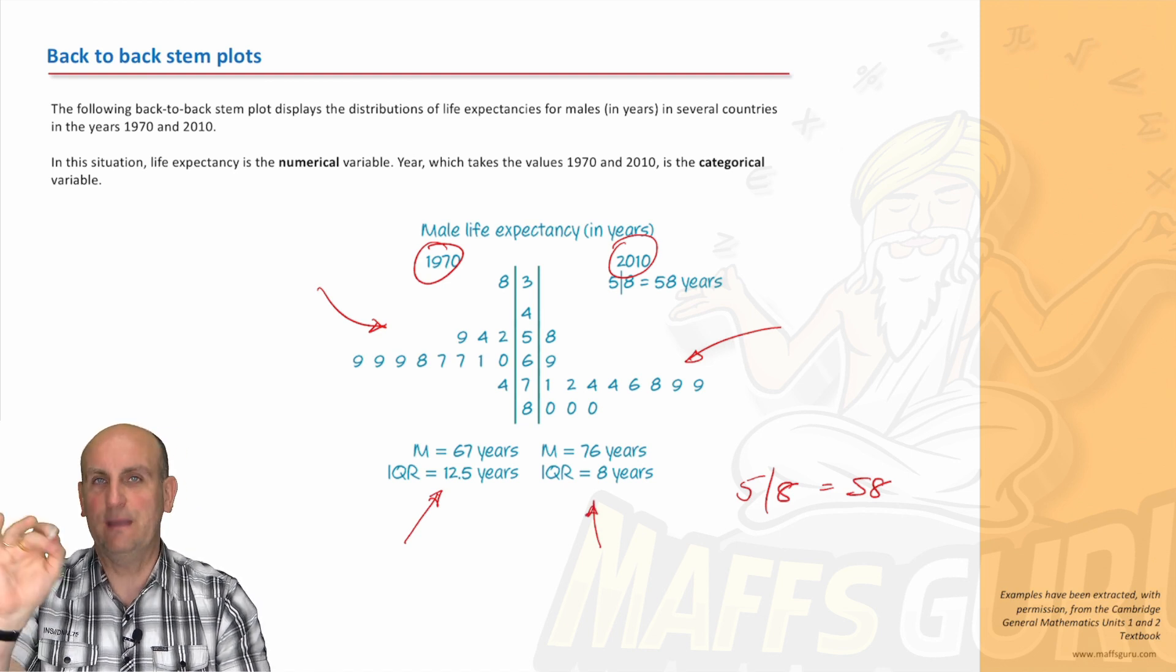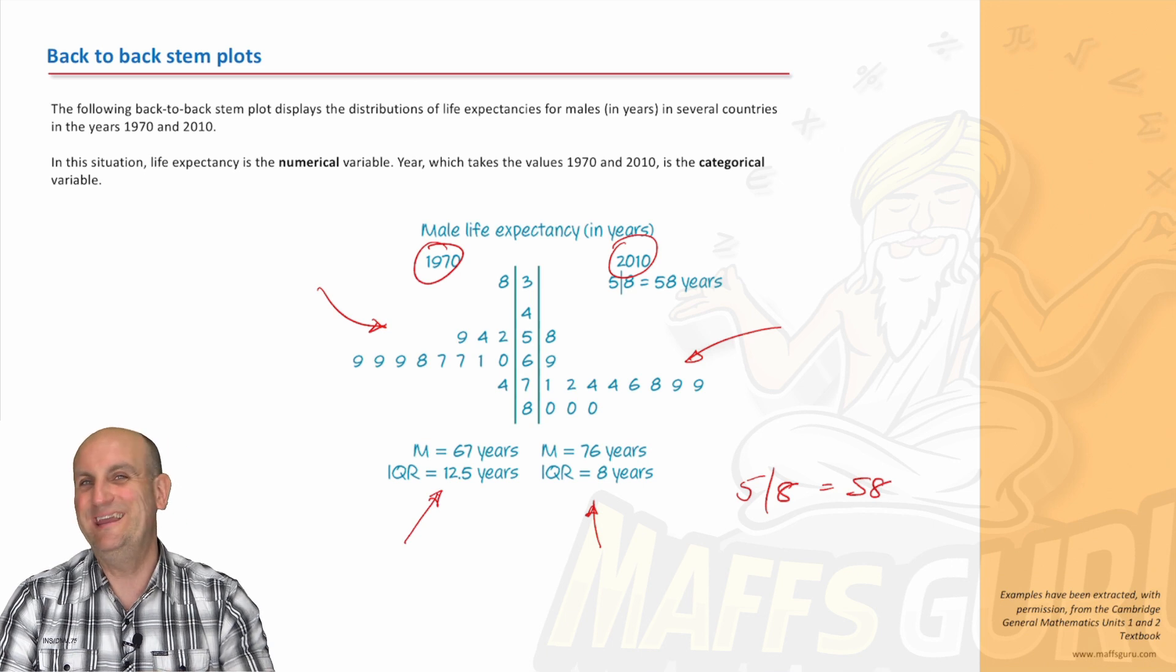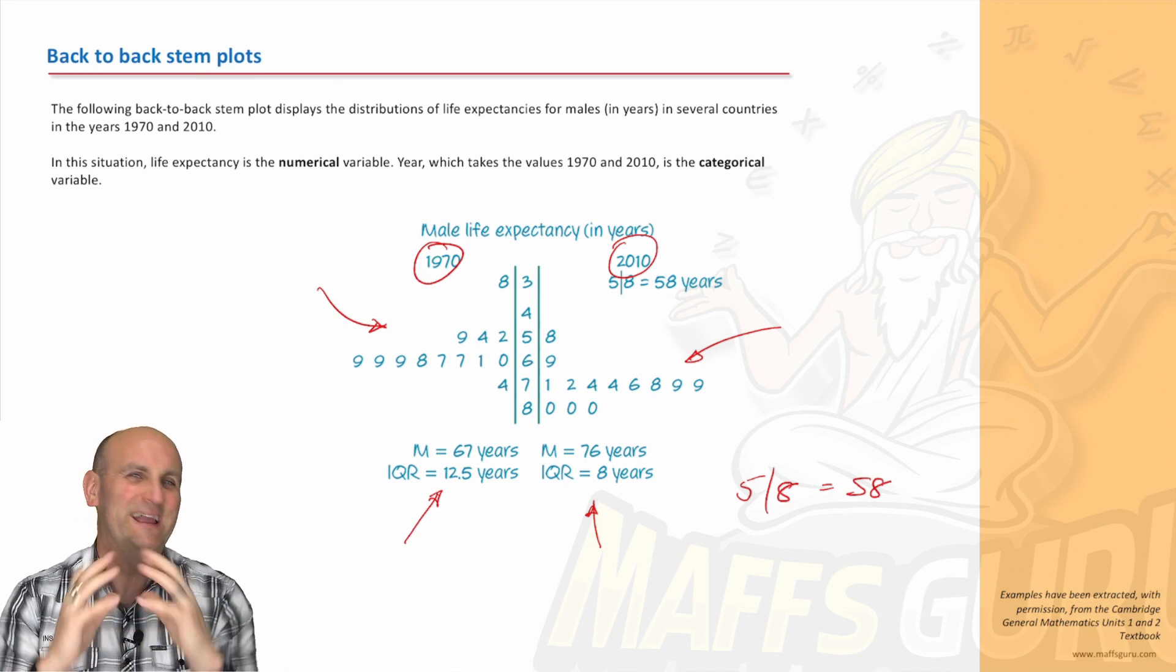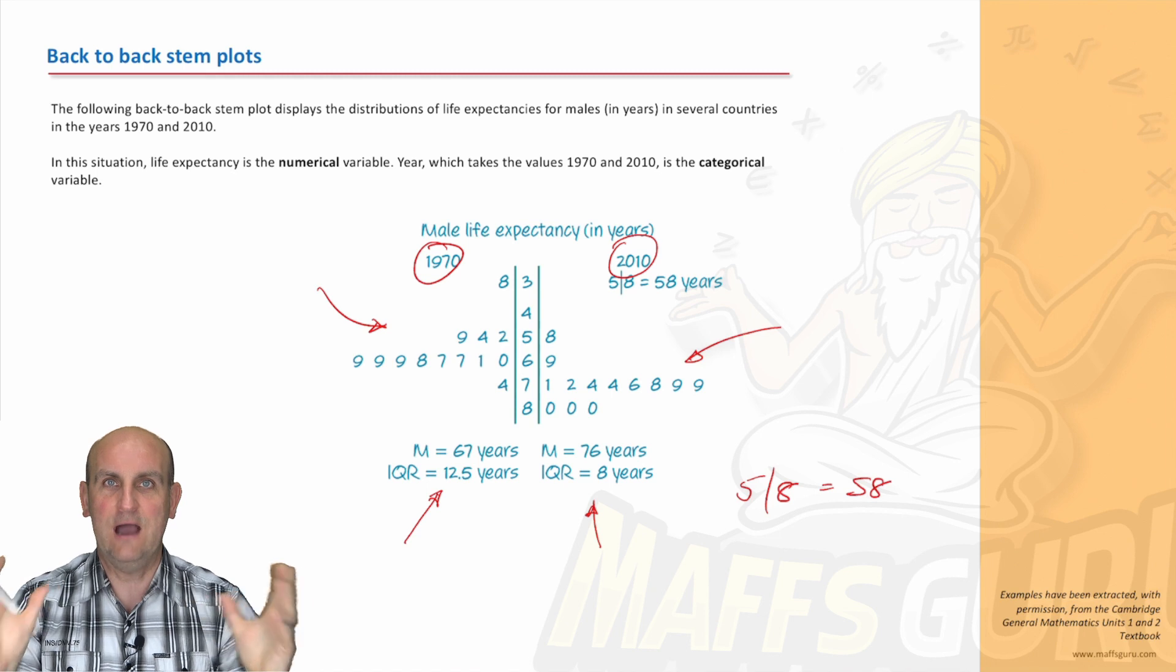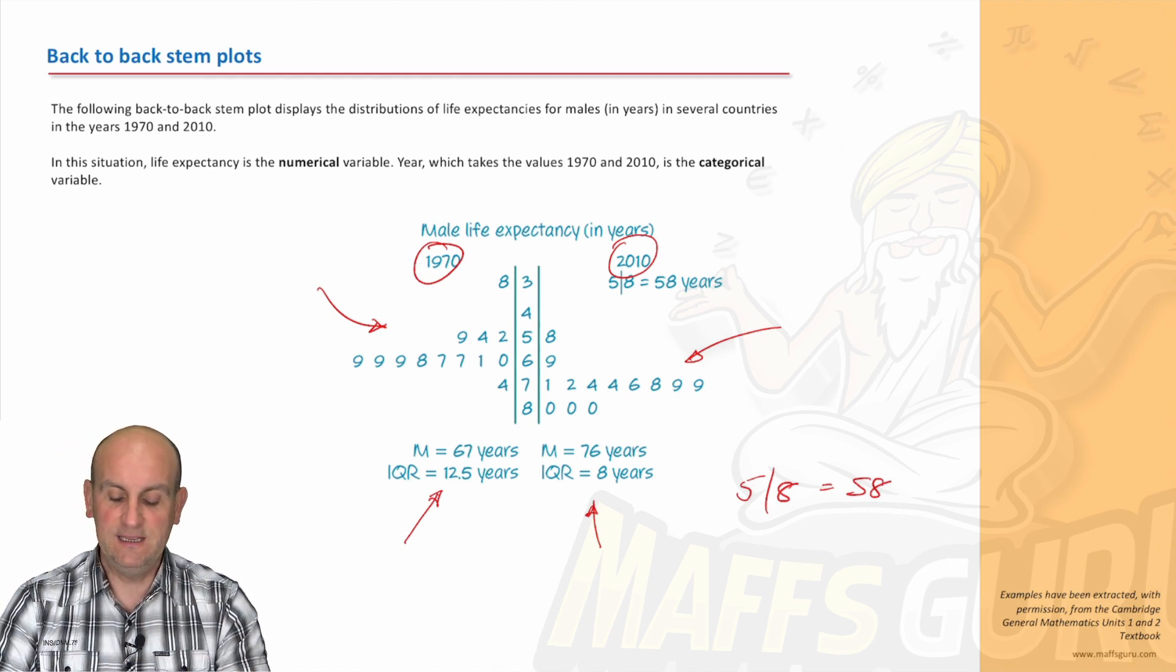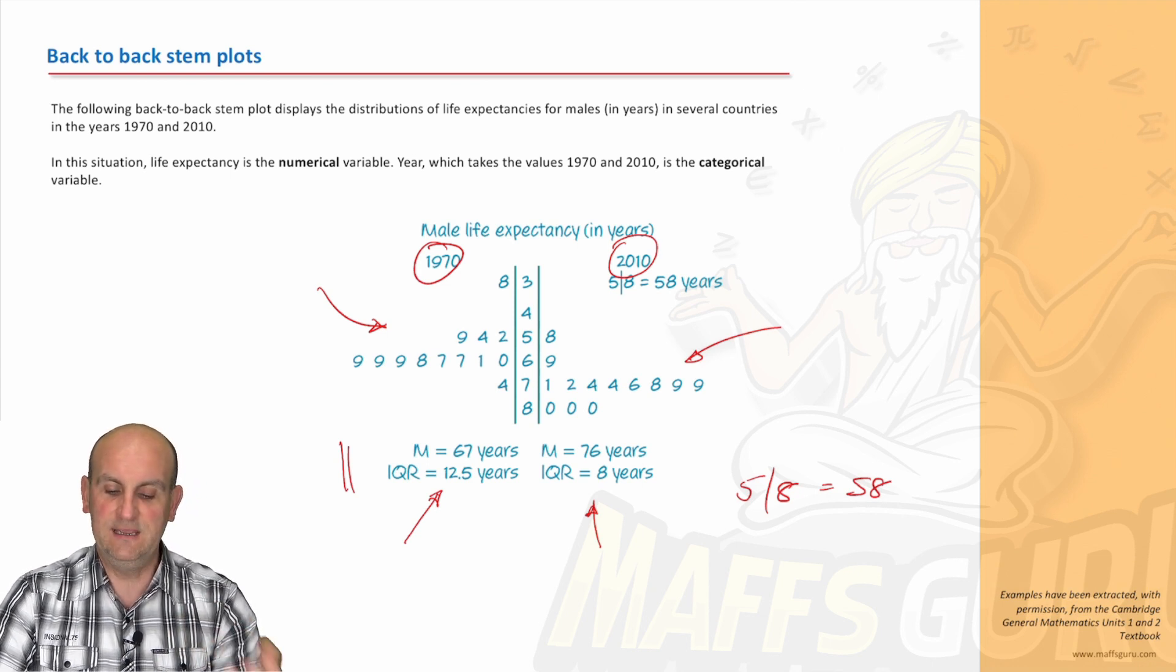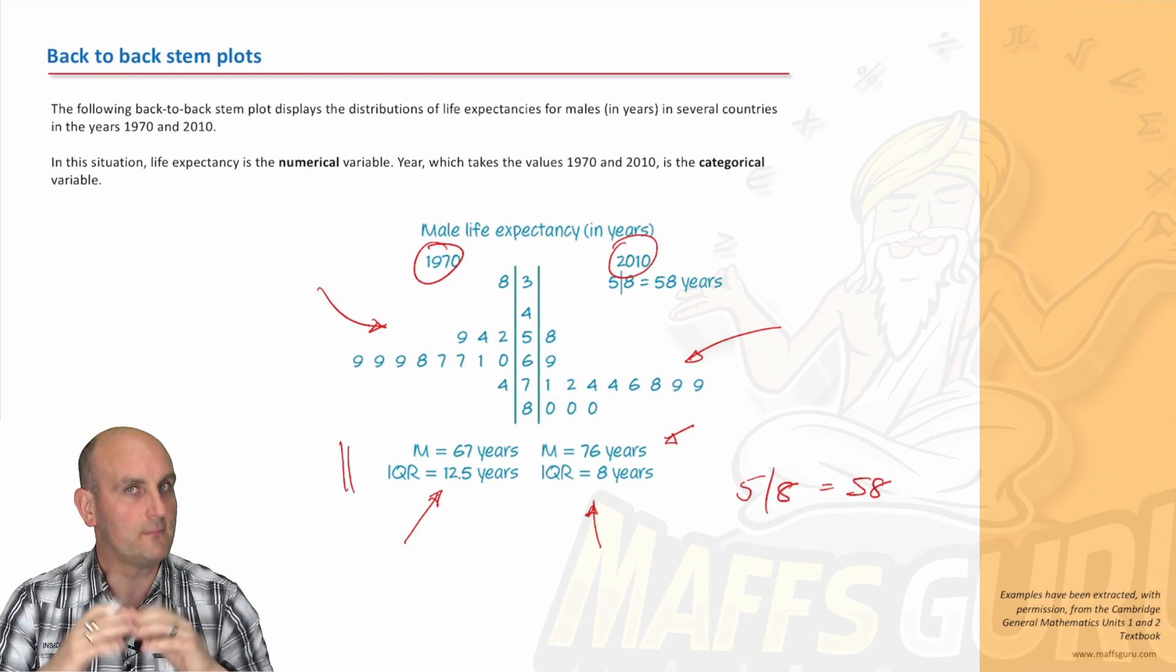They've said that for 2010, the M, capital M, what do you reckon capital M stands for? Absolutely. Median. The middle value would be 76 years, with the interquartile range being eight. Now, why would the interquartile range be important to us? Absolutely. Previous video looks at the idea of upper fences and lower fences, if that was going to be important to us. Later on, we actually quite like the interquartile range, because it looks at the middle 50% of our data, and it stops outliers messing with our heads. And again, that's all coming up. Whereas what we notice here is for our 1970 data, our median is 67 years, and our interquartile range is 12.5 years. So what automatically, I can look at these things here and go, well, hold on a moment. In 1970, our median was much lower than it was for 2010, because we've gone from 67 years to 76 years.